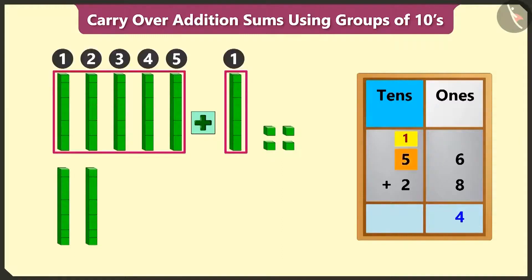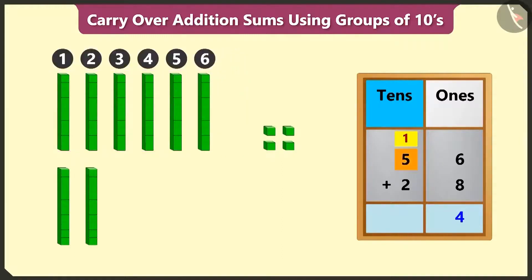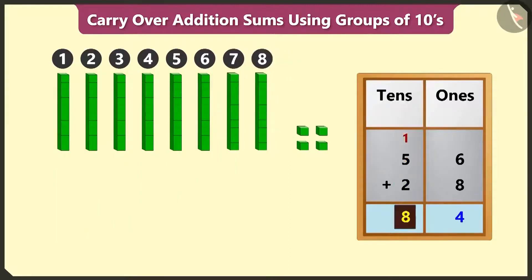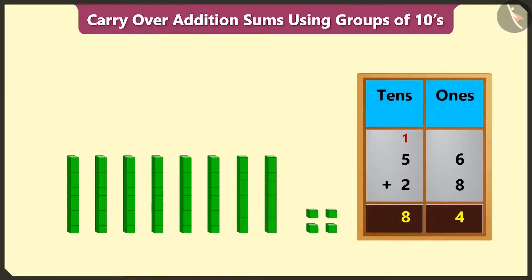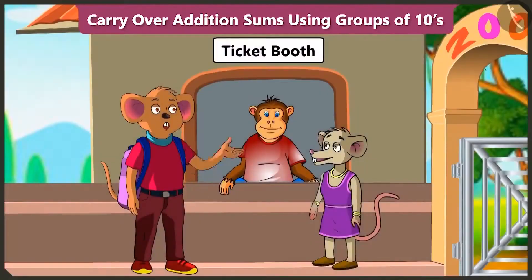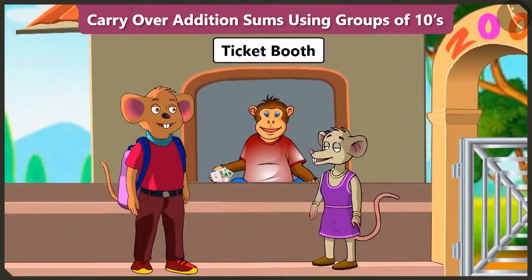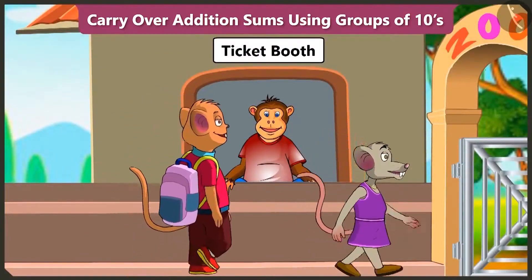Adding 1 and 5 will make 6, and 6 added to 2 will make 8. So 8 tens and 4 ones means we have to give 84 rupees. Please take 84 rupees. Take your ticket. Let's go inside.